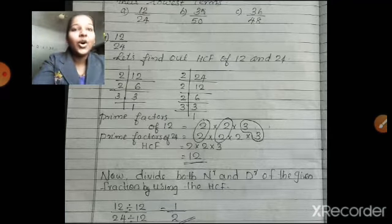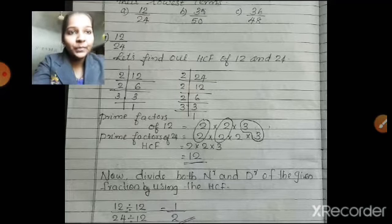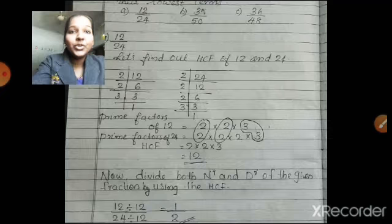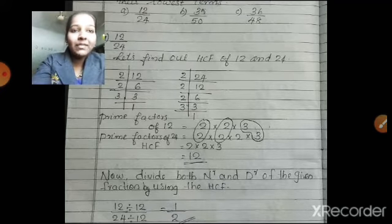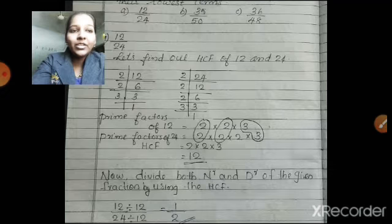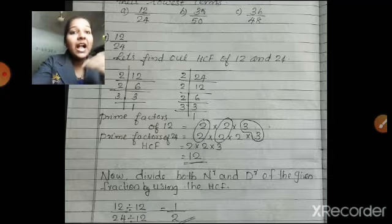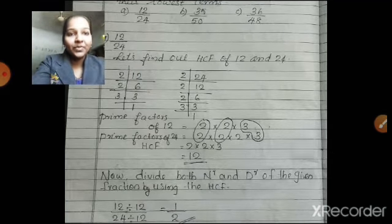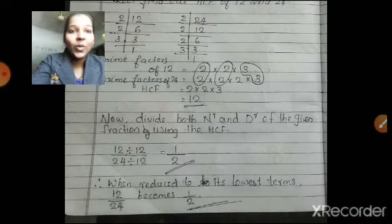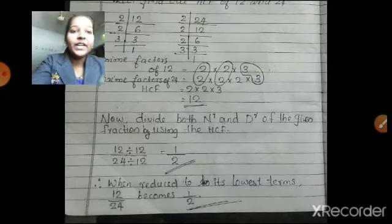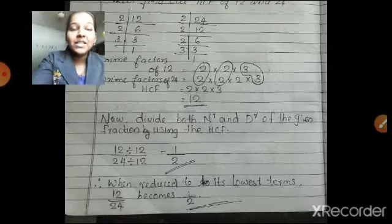Now you have to take the common factors. Common factors are 2, 2, and 3. Multiply all three numbers together and you will get 12. So the HCF of 12 and 24 is 12. The next step is to divide both the numerator and denominator of the given fraction by the HCF. We got the HCF as 12, so divide both the numerator and the denominator by 12. 12 divided by 12 is 1, and 24 divided by 12 is 2. Therefore, when reduced to its lowest term, 12 by 24 becomes 1 by 2.